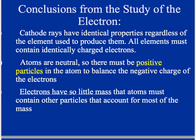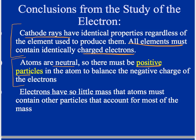The conclusions from the study of the electron were that cathode ray tubes had identical properties regardless of the element used to produce them — it didn't matter what type of gas was put in the tubes. So all elements must contain these identically charged electrons. Atoms were also discovered to be neutral, meaning there had to be a positive particle in the atom to balance the negative charge. And since electrons have so little mass, atoms must contain other particles — protons and neutrons — that account for most of the atom's mass.